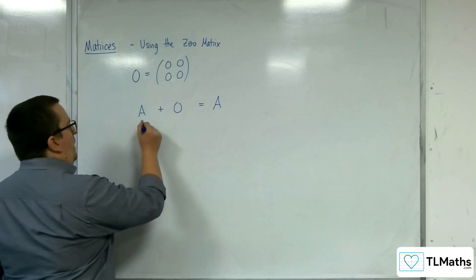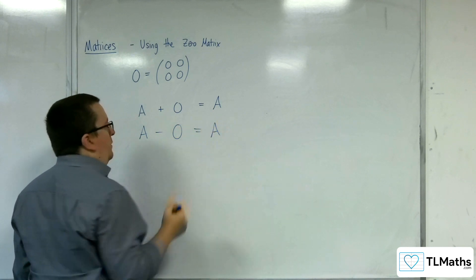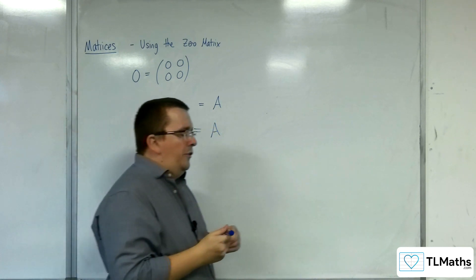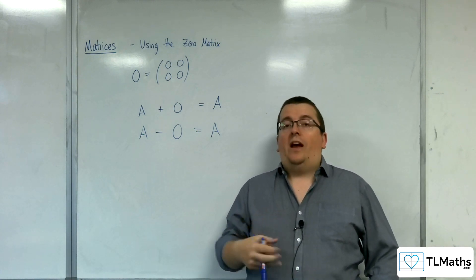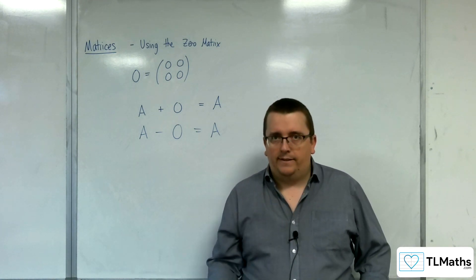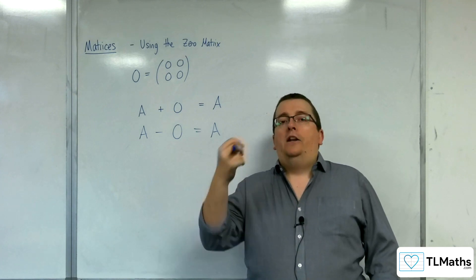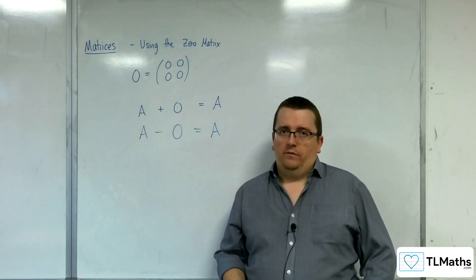And in a similar way, if I subtract, then I also have A. So, the zero matrix is an identity matrix under addition and subtraction for matrices.